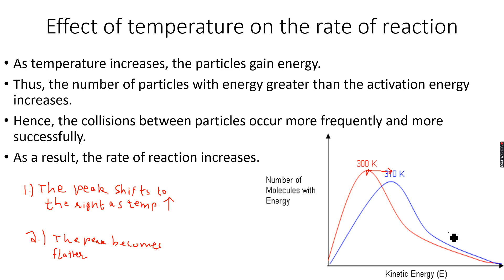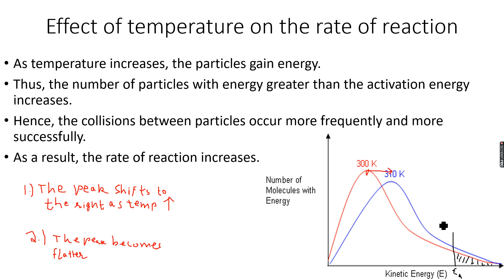If this straight line represents the activation energy, Ea, then at 300 Kelvin only this number of molecules have energy greater than the activation energy. But at 310 Kelvin, we have more molecules which have energy greater than the activation energy.